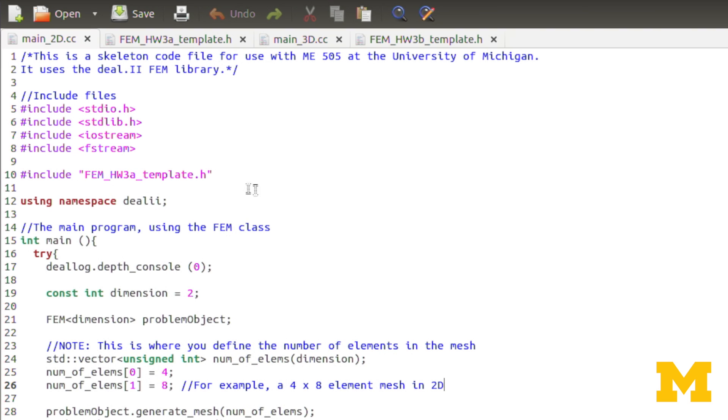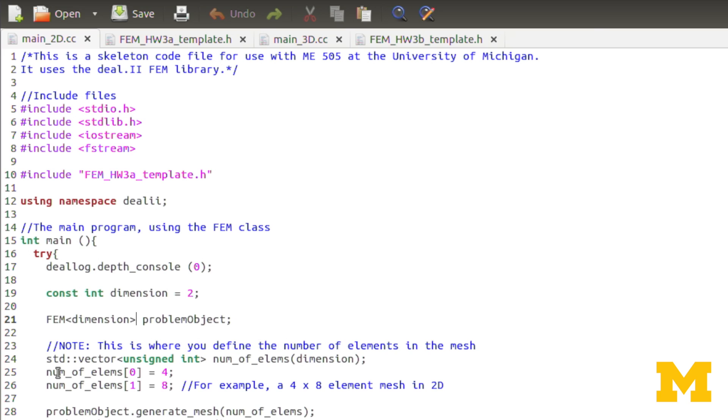You can see it's basically the same structure as the previous homework assignment. One difference is that now I'm setting the dimension equal to two, which we're then inputting as the template parameter for our finite element method class. The other difference is that when we're generating the mesh, instead of passing in a single integer, since it's 2D, we're passing in a vector with two integers.